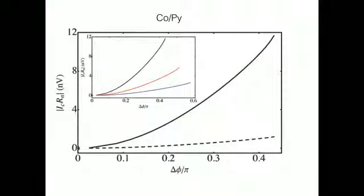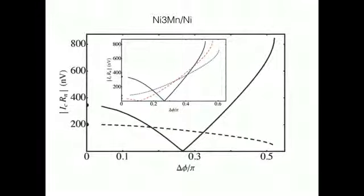Noteworthy is also the presence of a finite singlet contribution to the current, shown as a dashed line, despite the very wide magnetic system considered here. This is due to the cascading proximity effect in a continuously rotating magnetization.